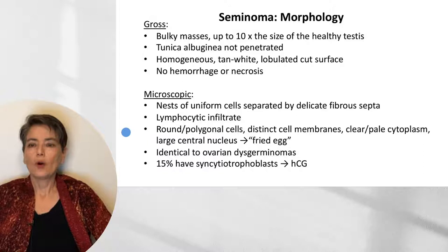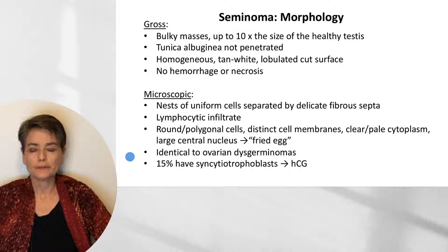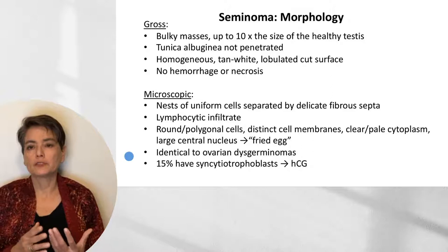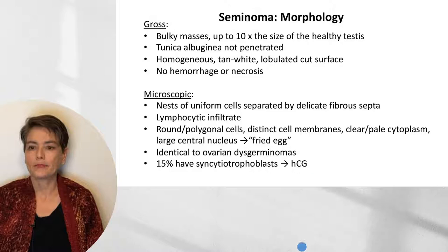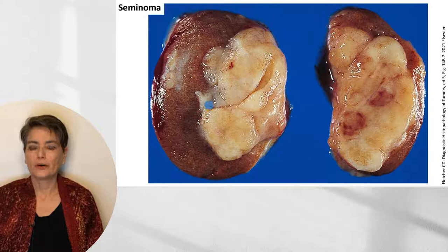What we see morphologically in seminoma is identical to what we see in an ovarian tumor called a dysgerminoma — that is the one where we use a different term. About 15% of seminomas will have syncytiotrophoblasts, which can lead to a mild increase in HCG. Here we can see the cut surface of a classic seminoma alongside the healthy testis — a lobulated tan-white tumor bulging from the cut surface without areas of hemorrhage or necrosis.